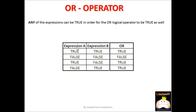Looking at the same setup — expression A is true, expression B is true, both of them are true, so the OR operator comes out as true. The next row has both A and B as false, neither of them are true, therefore OR comes out as false. On our third row, A is true and B is false — we have at least one that's true, therefore OR comes out as true. Finally, A is false and B is true — at least one of the values is true, therefore the OR operator comes out to be true.